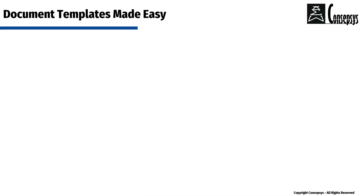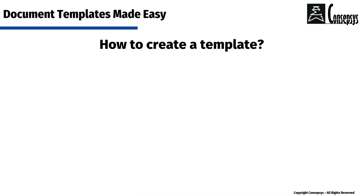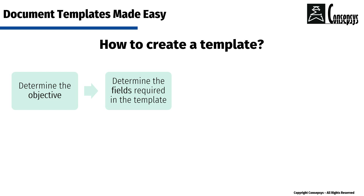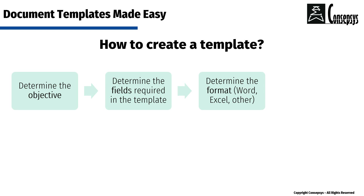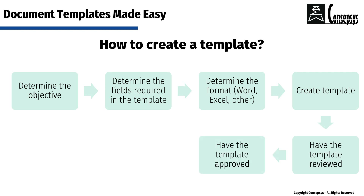Now let's look at how to create a document template. Here are the steps: first, determine the objectives of your template; then determine the fields required — what kind of metadata are you going to need? Next, determine the format: is it going to be a Word template, an Excel template, or something else? Then create the template, have it reviewed, have it approved, and launch it. Of course, you'll need to train every author on this new template.